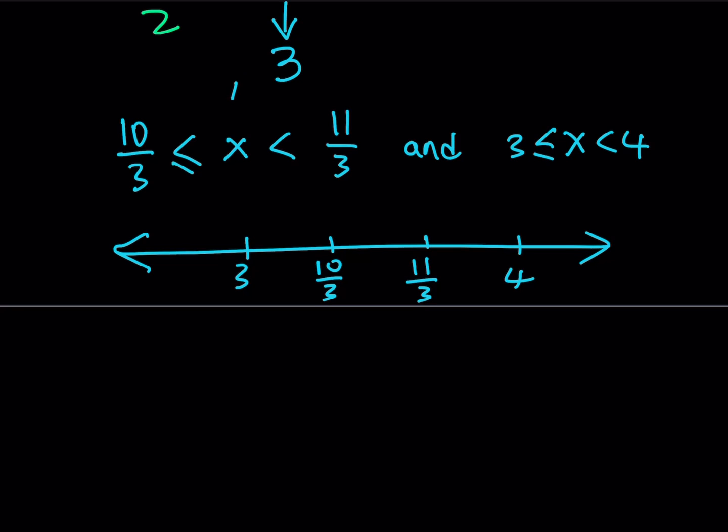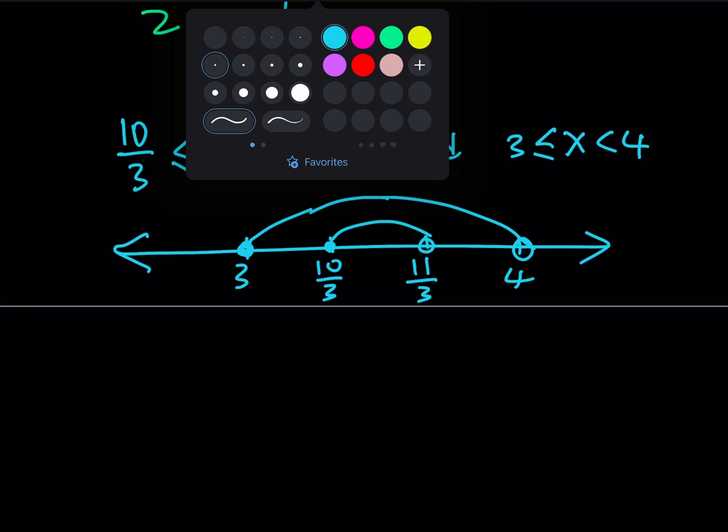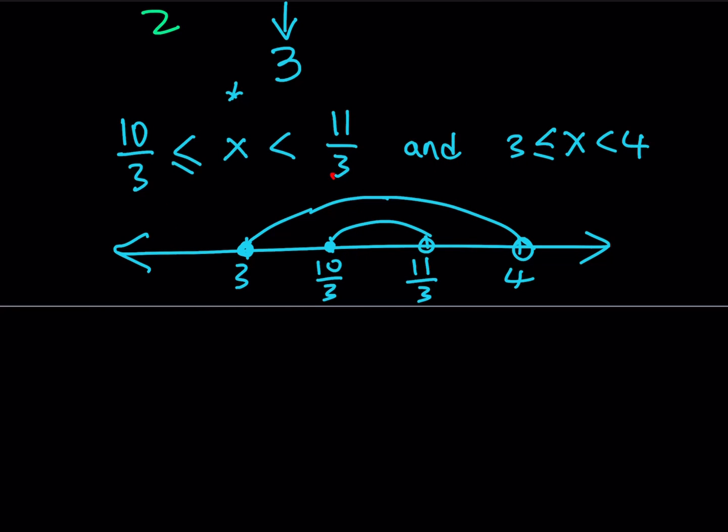Now this first inequality tells us that x values are going to be in this interval, with 10/3 being equal and 11/3 not included. And the other inequality tells us x is going to be between 3 and 4, equal to 3 but not equal to 4. And you have to look at the intersection of these two inequalities. Where do they intersect? They exactly intersect where the first inequality is. Therefore, as a result, we can safely say that x needs to be between 10/3 and 11/3.